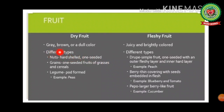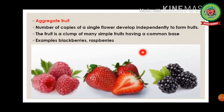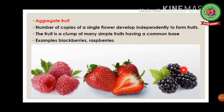Dry fruits are normally grey-brown or dull in color, while fleshy fruits are normally juicy and brightly colored. Types of dry fruits include nuts (hard-shelled), grains (one-seeded fruits of grasses and cereals), and legumes such as peas. Fleshy fruits include cucumber, blueberry, and tomatoes. Subtypes include drupe — a simple one-seeded fruit with an outer fleshy layer — and berry — which has a thin covering with seeds embedded in flesh.